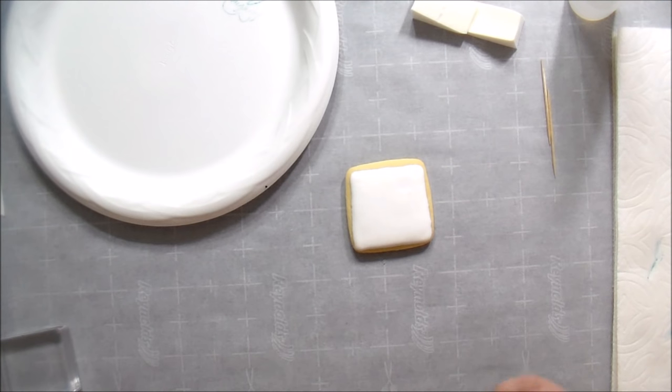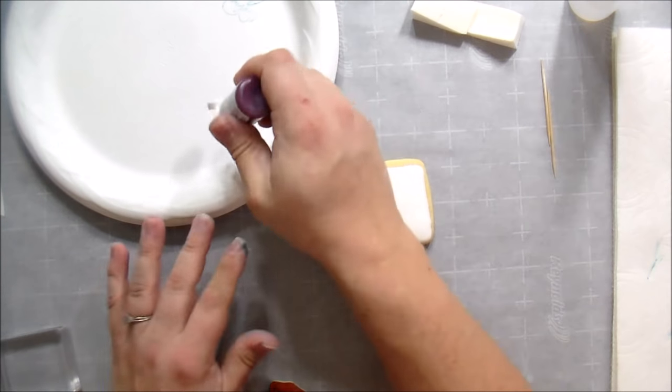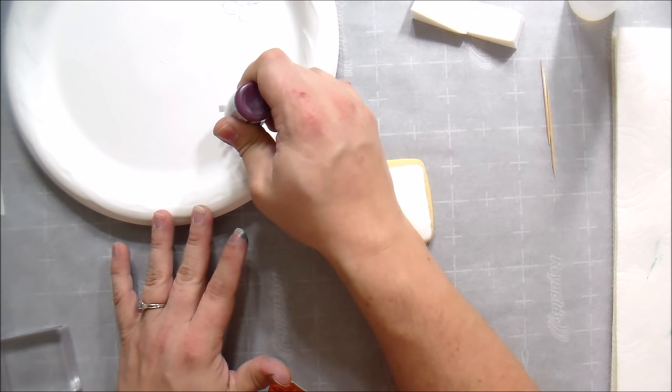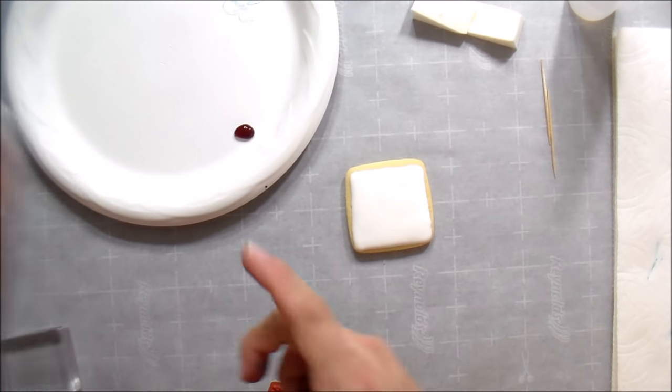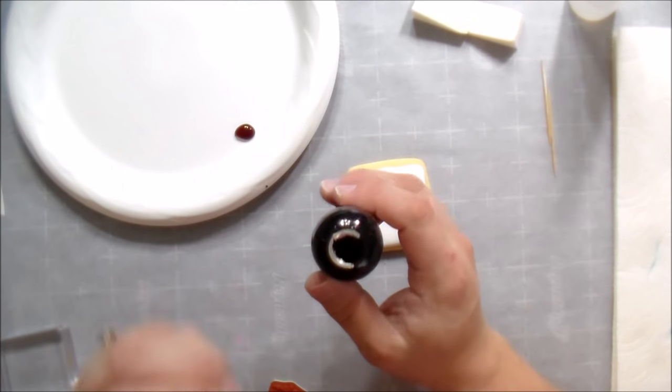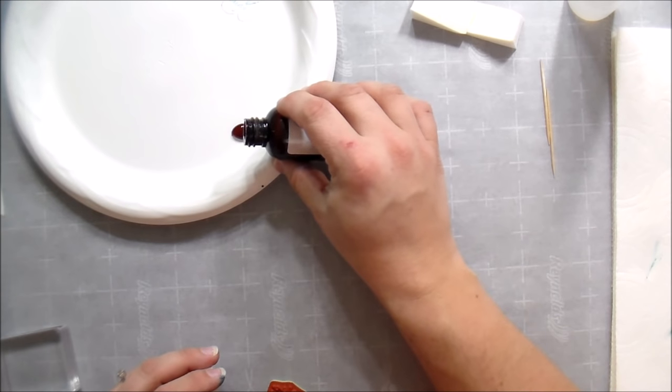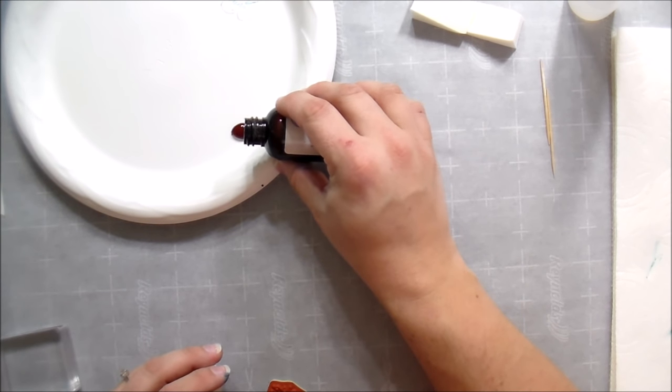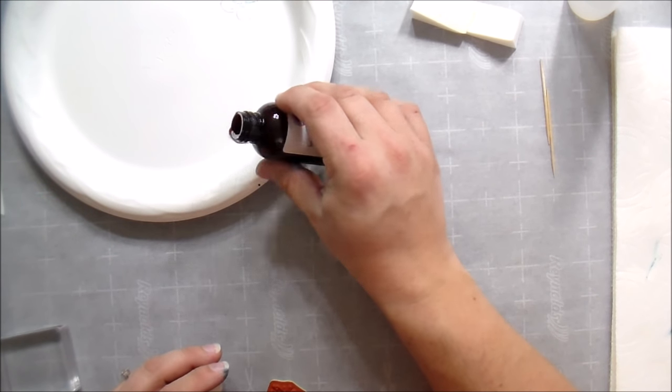So we're going to work on this stamp. What we're going to do is take our gel food coloring and we're going to put a little bit of it out on our palette. And then we're going to take our clear extract or vodka, whatever you're using, and just put just a touch out on the palette. You really don't want a lot of this. This is just thinning it down just a little bit so we can get that color to show through.